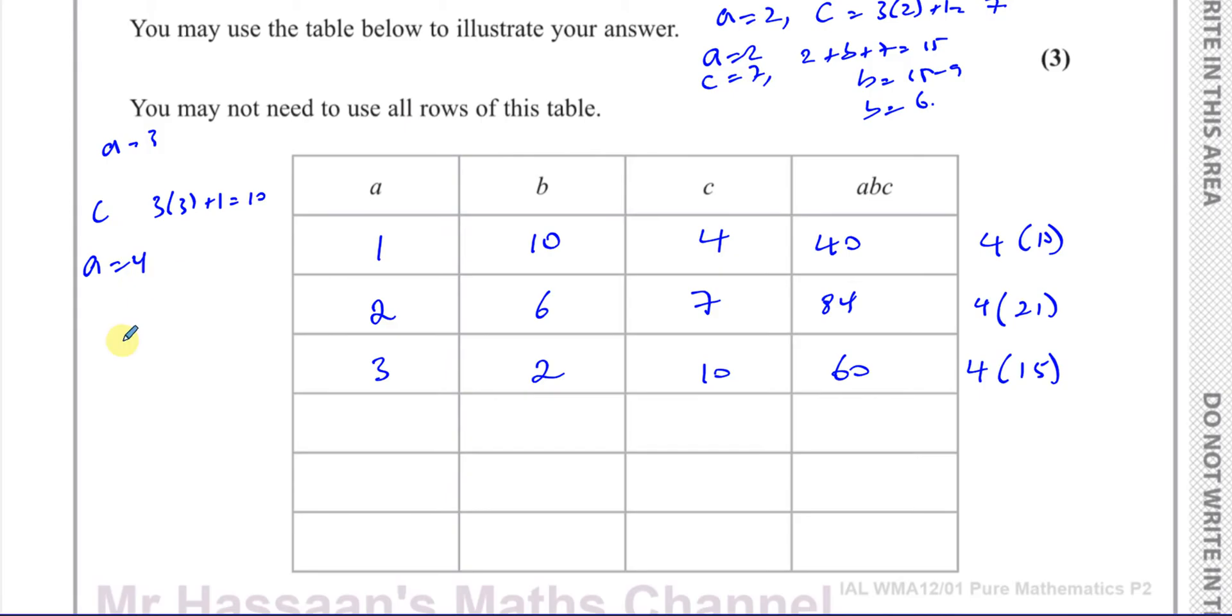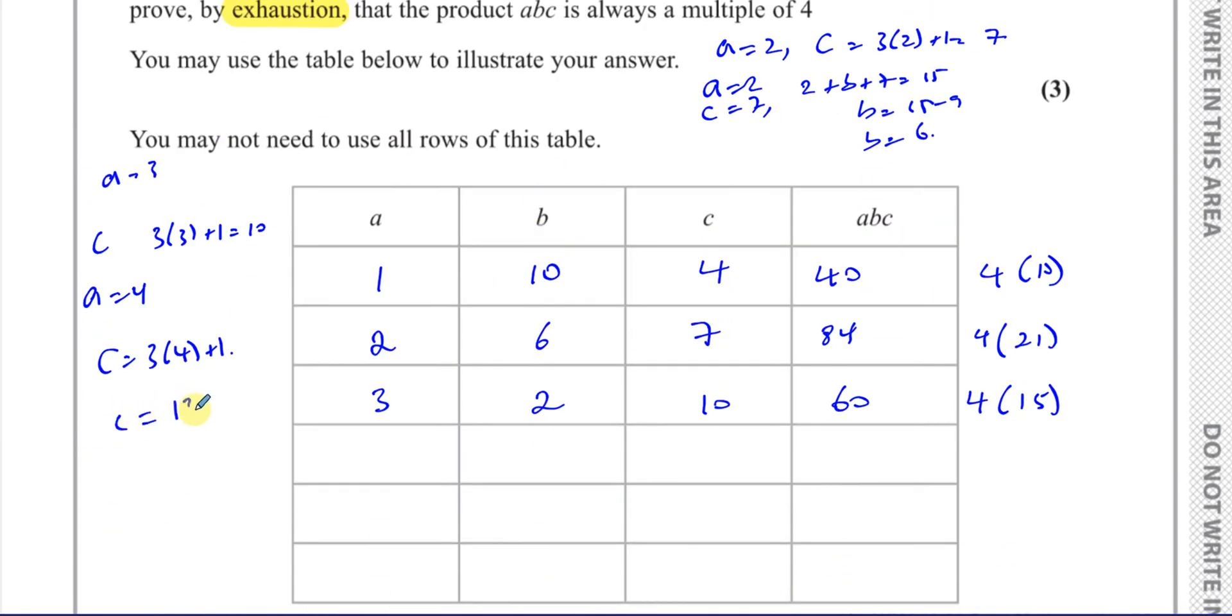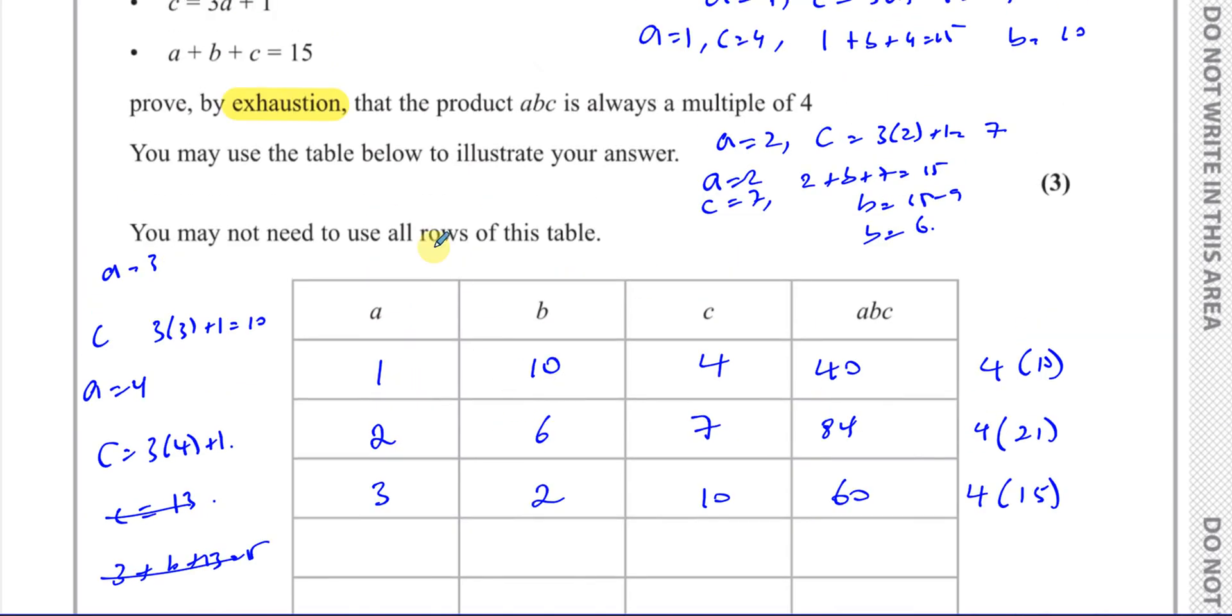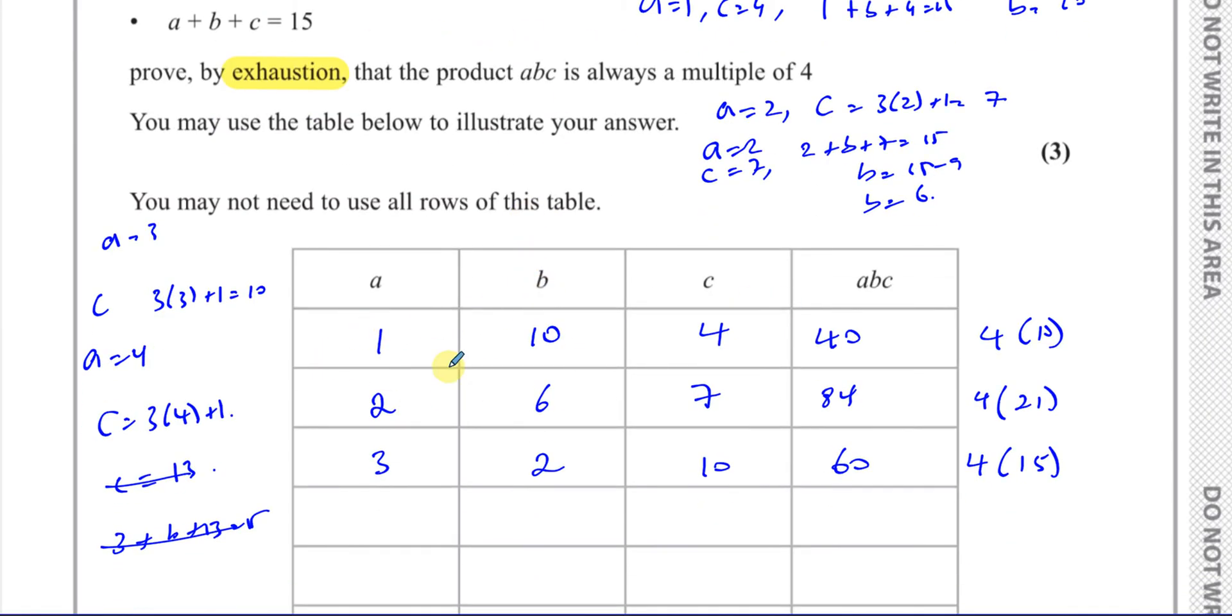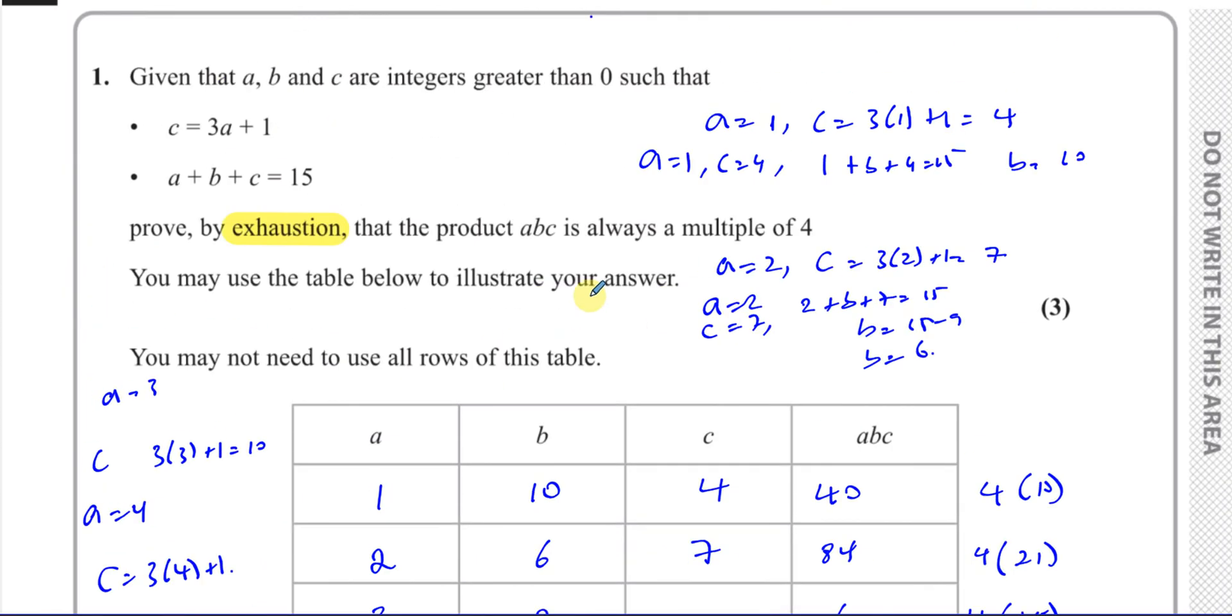Now when A equals 4, what happens is you end up with C is going to be 3 times 4 plus 1, which is going to give you C equals 13. And when you try to add them together, you have 4 plus B plus 13 equals 15. Well, you can't have any number for B because B has to be a positive integer, and this gives you more than 15. So B will have to be negative in this case. So we've exhausted all the possible values that A can be, and therefore all the possible values that C and B can be for A, B, and C to always be greater than 0.